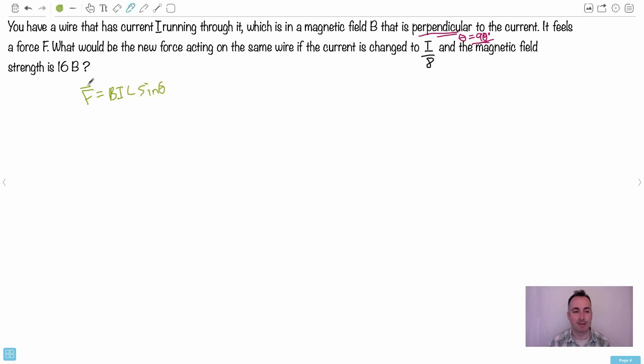So we have F equals BIL sine theta, of course. But we know that theta is 90. And remember, we learned that if theta is 90 degrees, what do we get? We have sine 90 equals 1. Therefore, we could state that F equals, it's nice and easy, it's just BIL without any sine theta. So F equals BIL. This is what we're going to use.